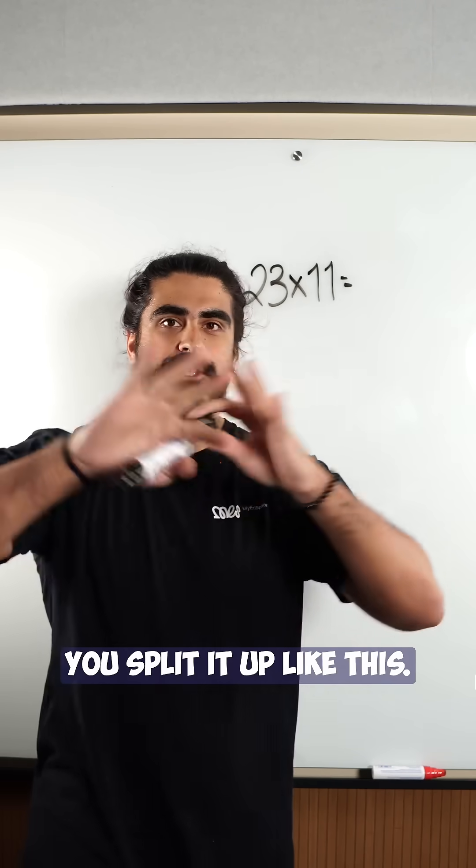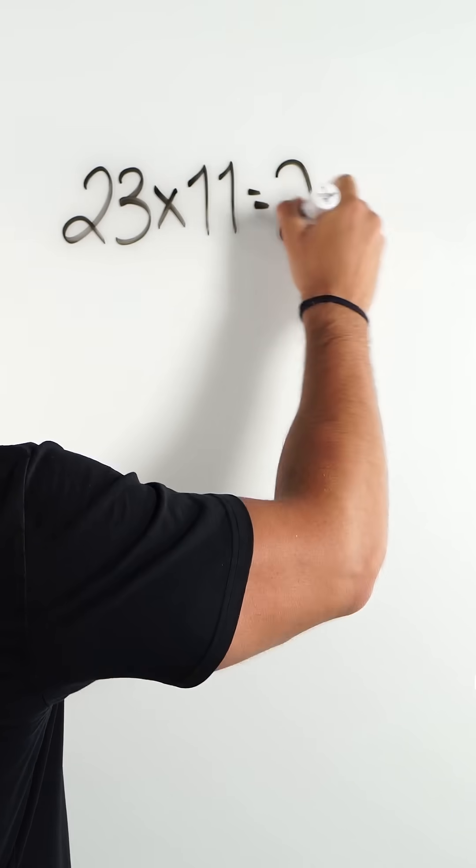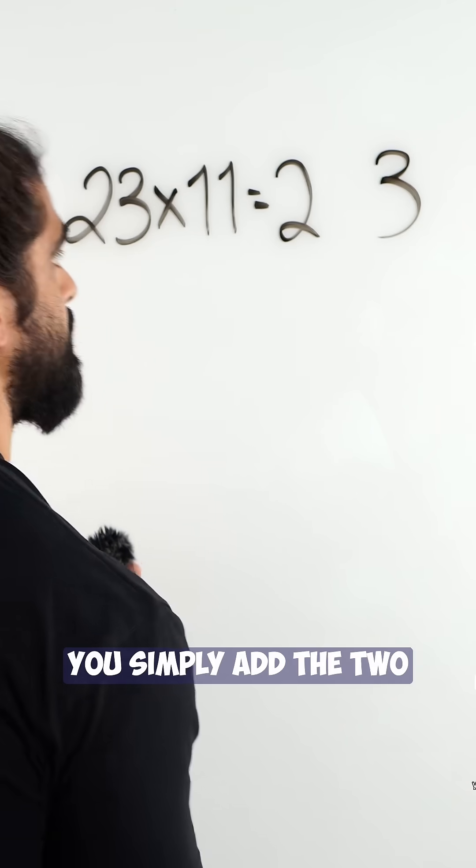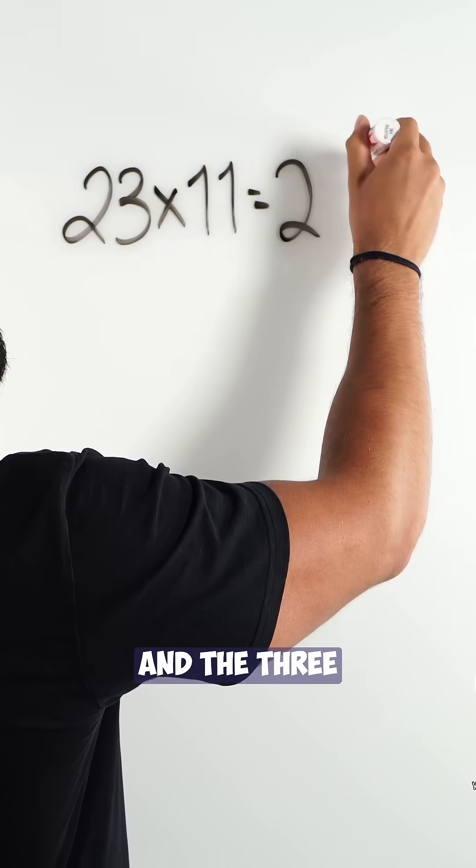You take the 2 and the 3, you split it up like this. Then it's all about the middle number. You simply add the 2 and the 3. You get 5.